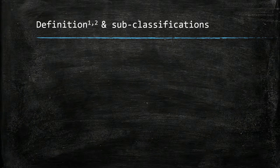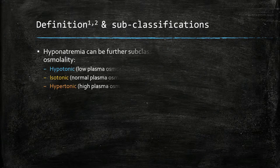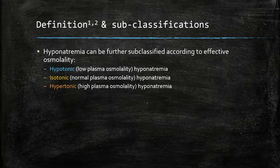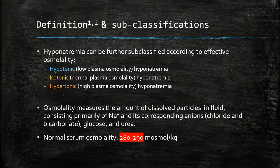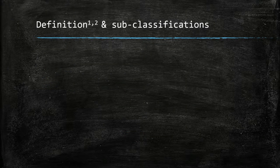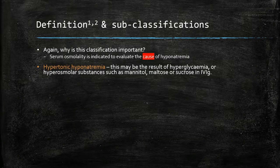The classification goes further to include osmolality. Hyponatremia can be hypo-, iso-, or hypertonic depending on the serum osmolality — the number of dissolved particles in the serum, consisting mainly of sodium, chloride, bicarbonate, glucose and urea. Normal serum osmolality is 280 to 290. This classification is important because it alludes to the cause of hyponatremia.